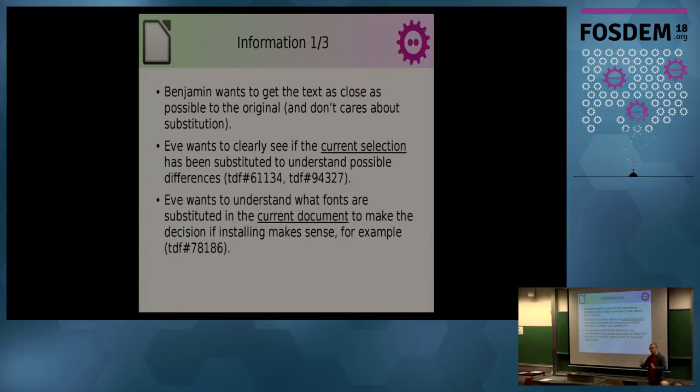What do we have to do? First thing is I'm trying to put all the requests tickets that we have into user stories. I start with a persona with the target user. We have two personas: Benjamin and Eve. Benjamin as the standard user does not care at all about the font, it has to work. Eve wants to see what the actual replacement is for the current selection where the cursor is, but she also wants to see in case a document has more than one font what is replaced in the document.